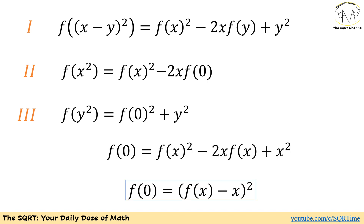We used x equals 0 and y equals 0. Now let's use x equals y in equation number 1. We get f of 0 equals f of x squared minus 2x times f of x plus x squared. On the right-hand side we can simplify and write it as the square of (f of x minus x). We will use the values of f of 0 we found in combination with this equation to solve the problem.